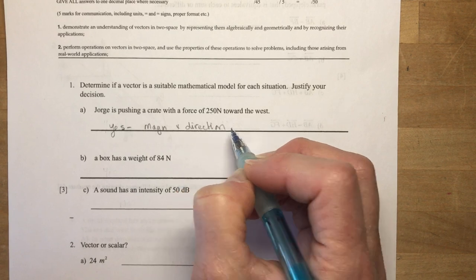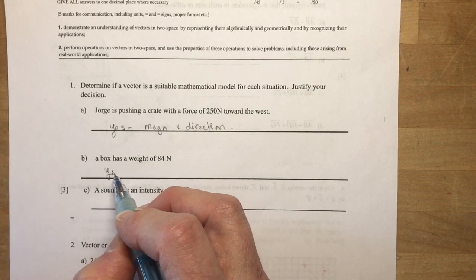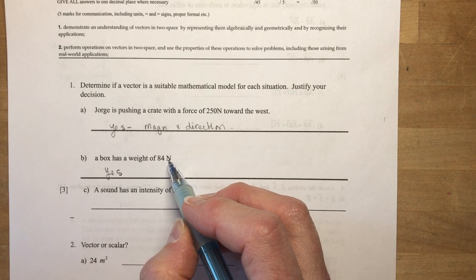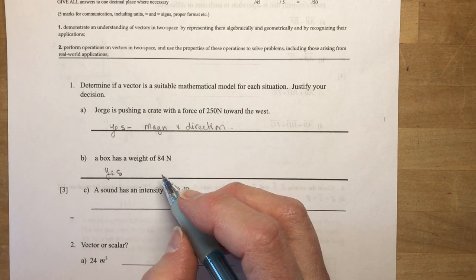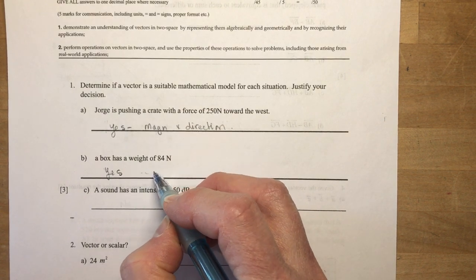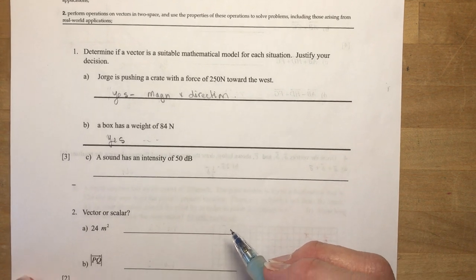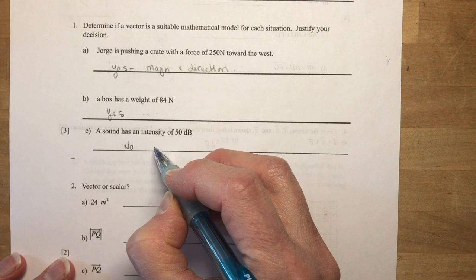A box has a weight of 84 Newtons. Yes, this is also a vector. We know that a Newton measurement is measuring the force of gravity as well, so the box has force and direction. Sound has an intensity of 50 decibels. No, this is not a vector. There's no direction.